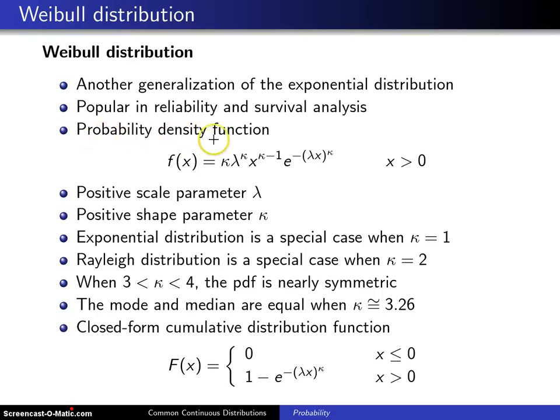The probability density function for the Weibull distribution, f of x, is kappa lambda to the kappa x to the kappa minus 1 e to the minus lambda x raised to the kappa power for x greater than 0. This is one of about eight ways of parametrizing the Weibull distribution. If instead of having lambda times x, we had x divided by lambda, for example, it would still be a Weibull distribution, so not everybody parametrizes it in this fashion.